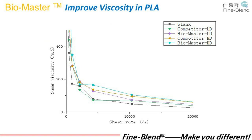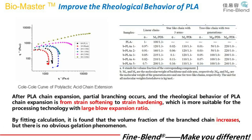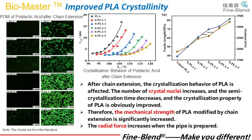Bio Master can improve viscosity in PLA. The following pictures compare PLA with and without Bio Master. With increasing addition amount of chain extender, PLA viscosity increases, and storage modulus and loss modulus increase. Literature research confirms that the viscosity of PLA increases with the increase of chain extender addition amount, while storage modulus and loss modulus increase simultaneously.